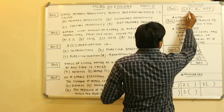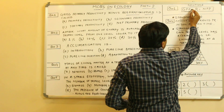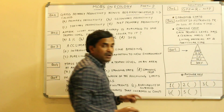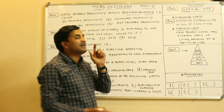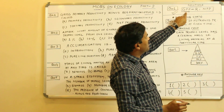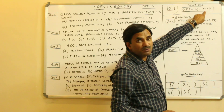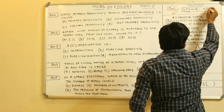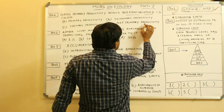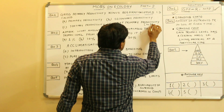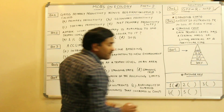The first question is: GPP (Gross Primary Productivity) minus the respiration losses. As clearly mentioned in NCERT, GPP minus respiration losses gives Net Primary Productivity, that is NPP. So the answer to question number 1 is D — Net Primary Productivity (NPP).